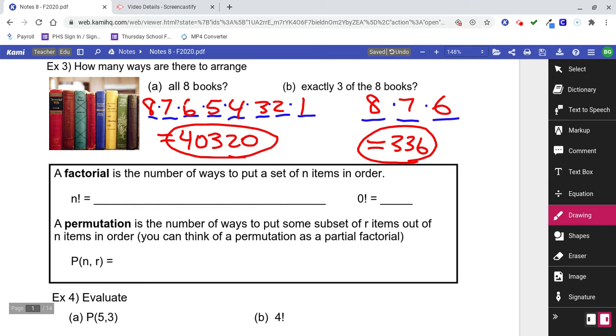A factorial is the number of ways to put a set of n items in order. It's given with that exclamation point, n factorial. The formula for a factorial is n! = n(n-1)(n-2)(n-3)...3·2·1. You keep going until 3×2×1. Most people see that formula and kind of freak out because it looks really complicated, but just look up here. You start with a number like 8, and you're going to go 8×7×6×5×4×3×2×1. You go from that number all the way down to one. Zero factorial equals one - that's just a definition. If you ever come across a problem that says 0!, you just say that equals one and move on.